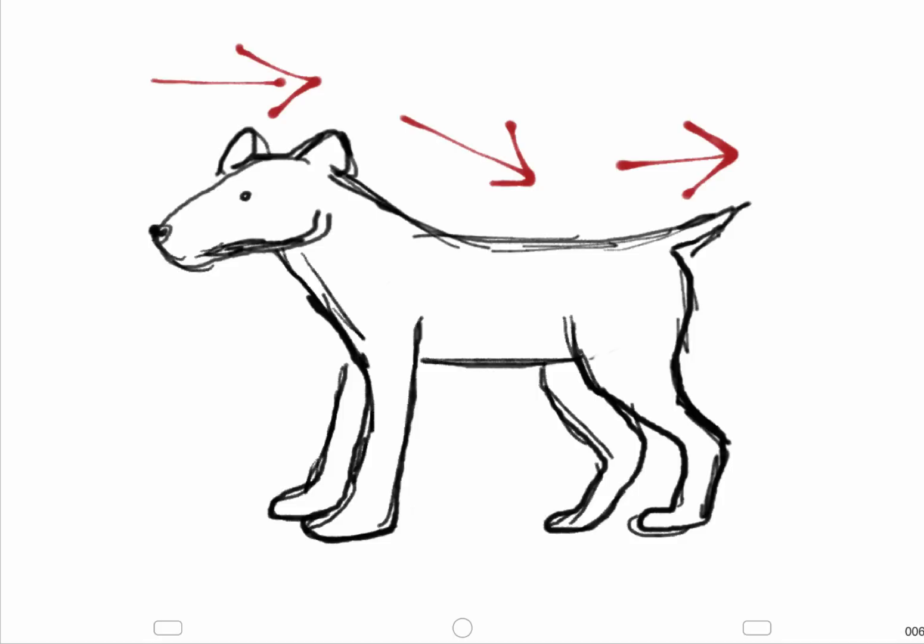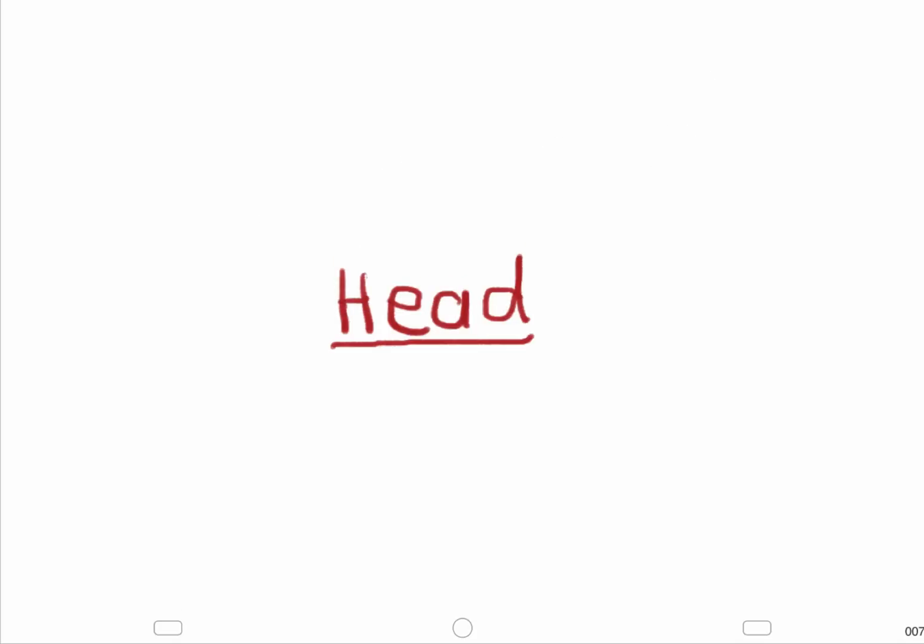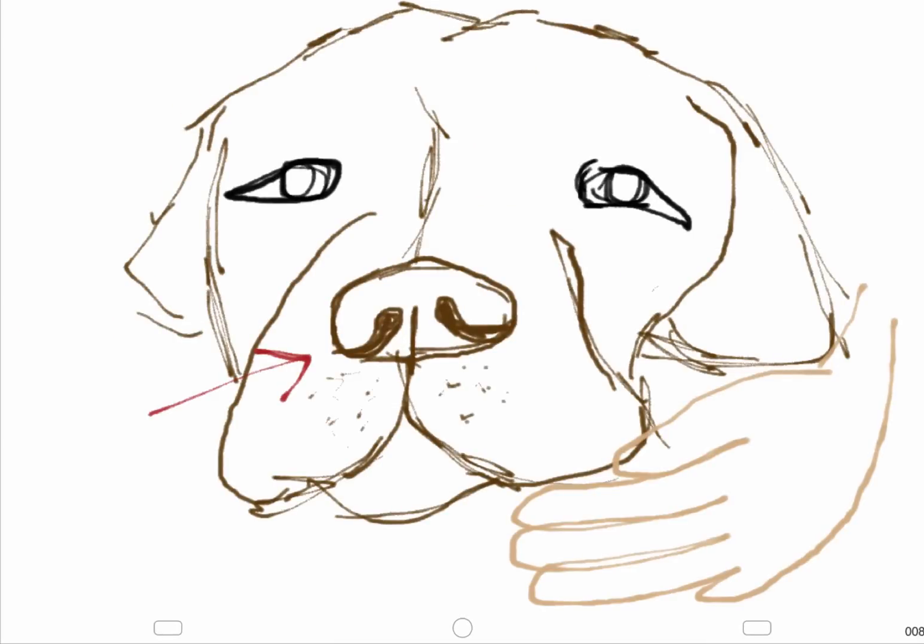The physical exam of the dog follows the order of examining the head, body, and then the tail. Examination of the head begins with examining the symmetry of the head musculature for any wastage.